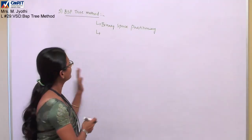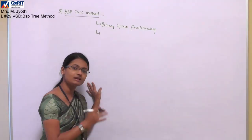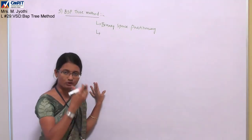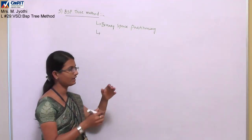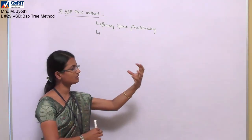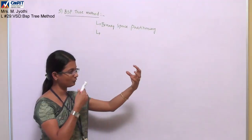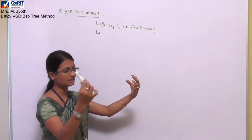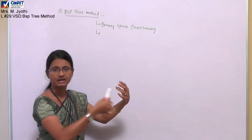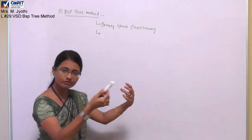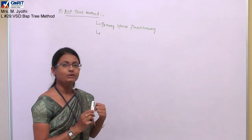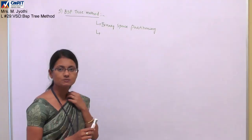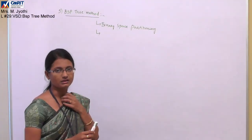This method is mainly applicable when the view reference point is changing — for example, looking from this side, from that side, from another side — while the object itself is fixed. When the view reference point changes, we have to consider this method: binary space partitioning tree.